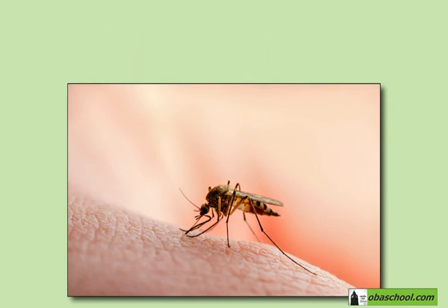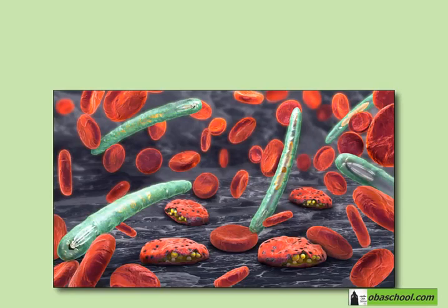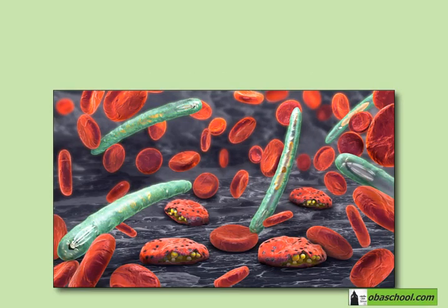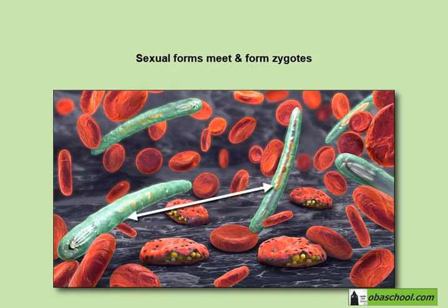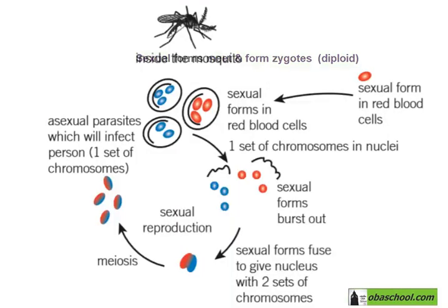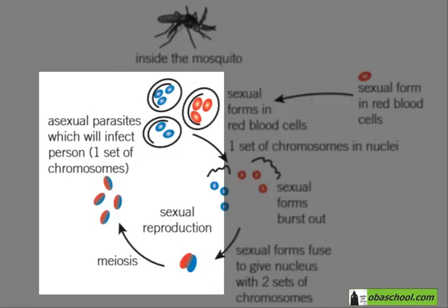There is a 20-minute window when the sexual forms develop. They burst out of the blood cells, and then the sexual forms meet. They form zygotes with 2n chromosomes — diploid zygotes. And then these zygotes undergo meiosis to produce new asexual parasites.